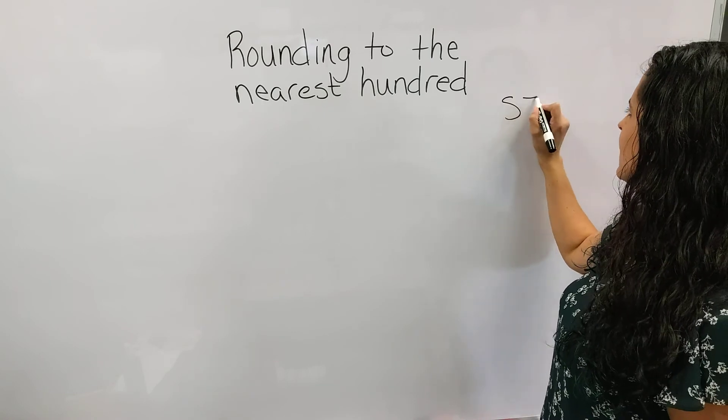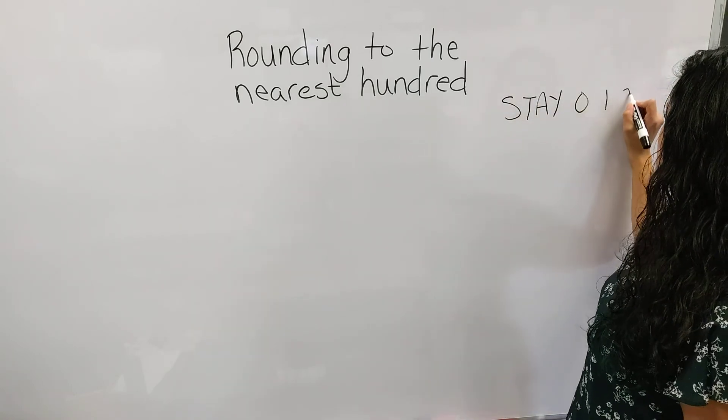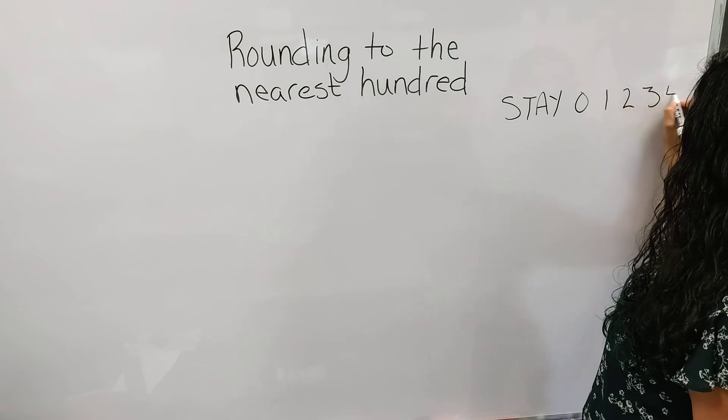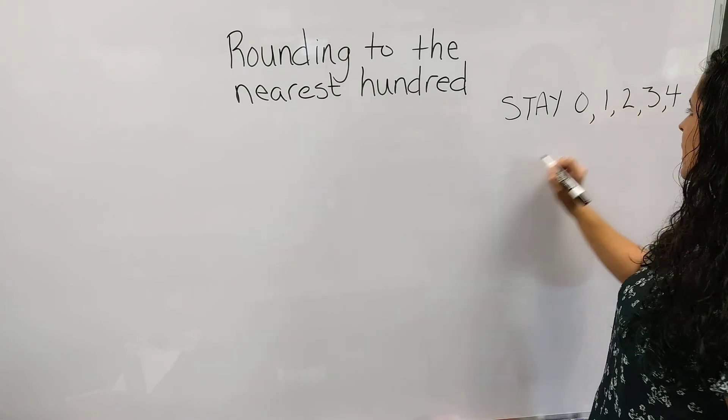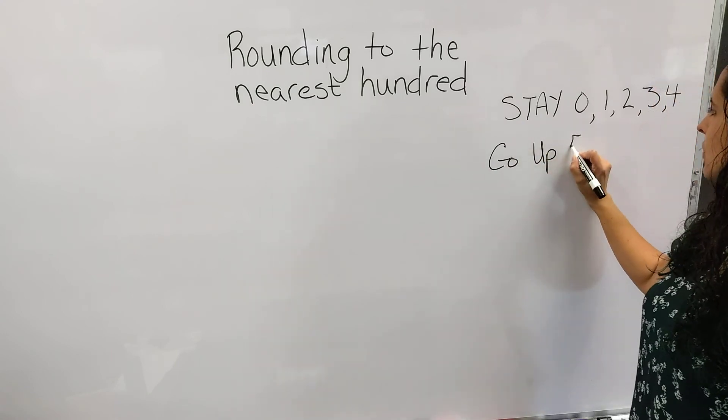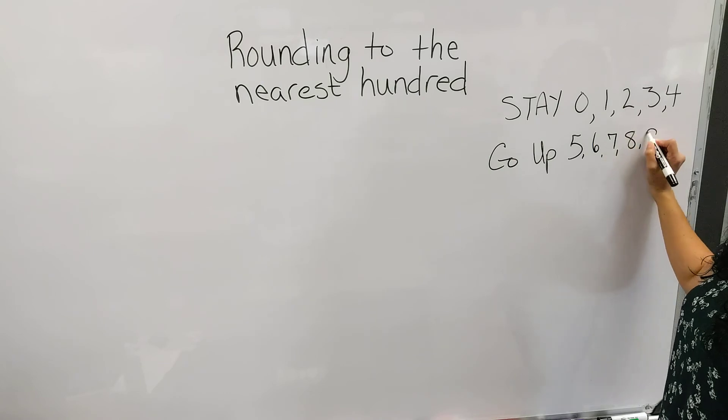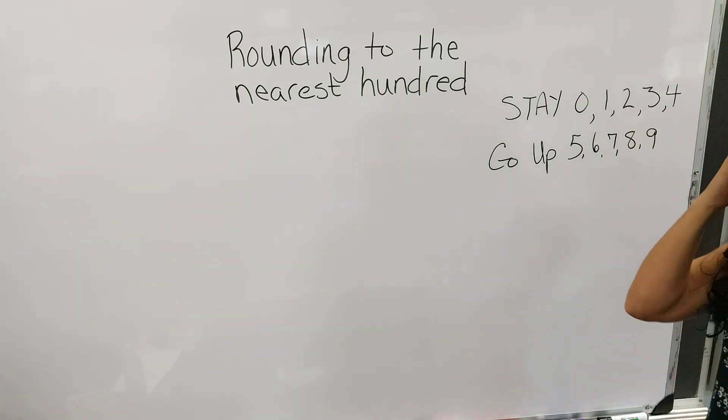So we're going to write stay: 0, 1, 2, 3, and 4. And go up: 5, 6, 7, 8, and 9. So these are our rounding rules.